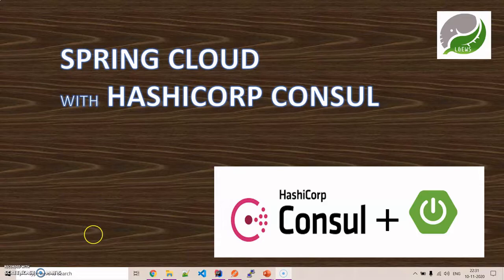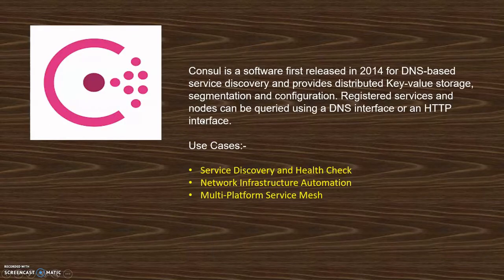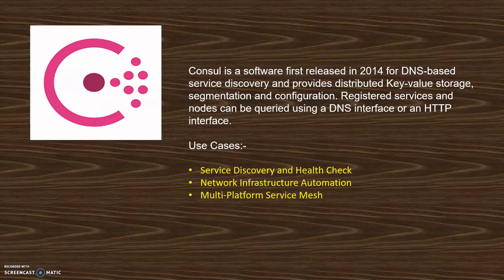We are going to show you how HashiCorp Consul is used as a service discovery and can also be used for monitoring health checks. Consul is a software first released in 2014 for DNS-based service discovery, providing distributed key-value storage, segmentation, configurations, and registered services and nodes. These can be queried using a DNS interface or an HTTP interface. It's a product from HashiCorp and has the wonderful feature of allowing services to communicate with one another using DNS names.